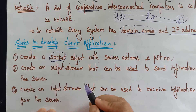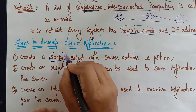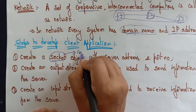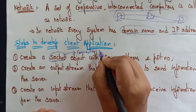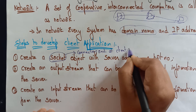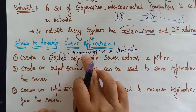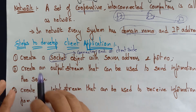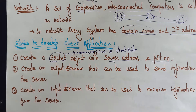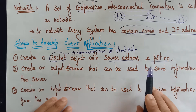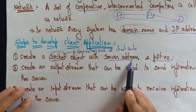First, what is a socket? A socket is nothing but a connection at the client side. Think of it like plugging in a charger — the charger point is connected to a socket, meaning it's a connection end at the client side. So the first step is: create a socket object with the server address and port number, because you want to send data to the server and you require that address.